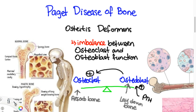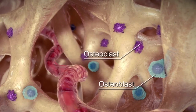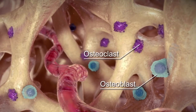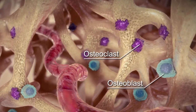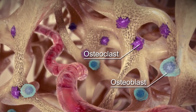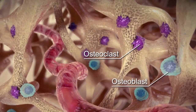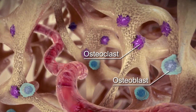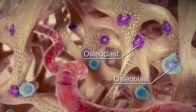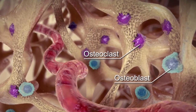However, in Paget's disease of bone, osteoclasts go crazy and begin to resorb bone without the permission of osteoblasts. This increased osteoclast activity leads to rapid bone remodeling and poor structure of the affected bone.